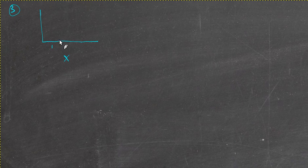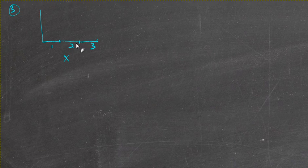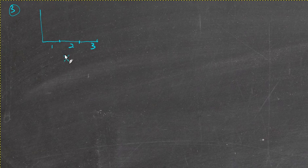So our random variable x could be 1, 2, or 3. These bars that we're going to draw are going to reflect the probability that each of these will happen. If we count them all up, there are 5, 3, and 2.